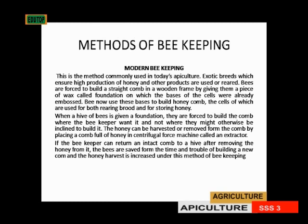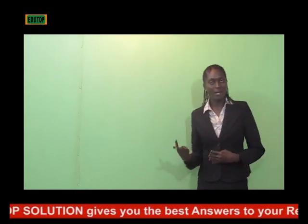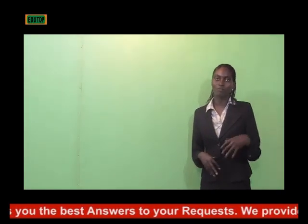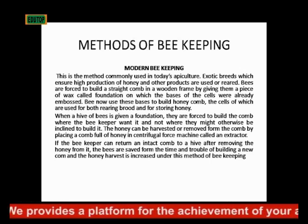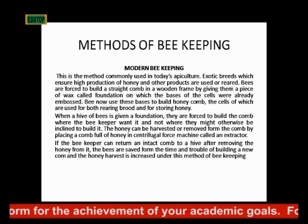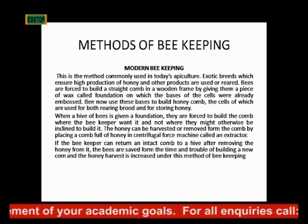In the modern beekeeping method, which is what is used in today's apiculture, exotic bees are used to ensure high production of honey and other products. These bees are of higher value, with higher growth rates and higher rates of honey and wax production. In the modern system, the bees are guided to build a straight comb in a wooden frame by giving them a piece of wax called a foundation, on which the bases of cells are already embossed. This conditions the bees to behave in a particular pattern for the keeper's purpose.